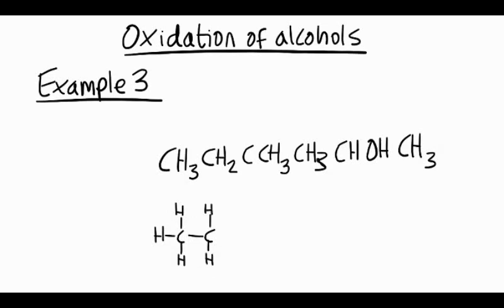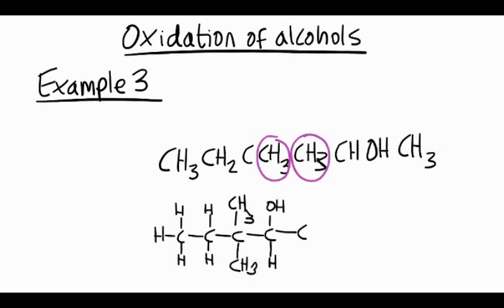So your CH3, CH2 looks like that. Then you've got a C with two CH3s coming off it. And then you've got another C with an H and an OH coming off it, and then a CH3 on the end. Notice the carbon that has the alcohol group has two carbons coming off it. That means we're dealing with a secondary alcohol.